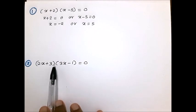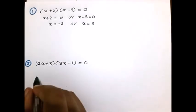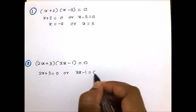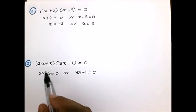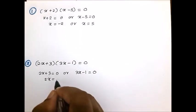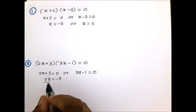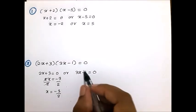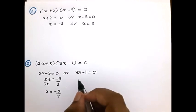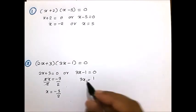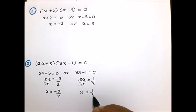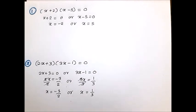Now look at the second example. Again, multiplication of two terms equals 0. We write 2x + 3 = 0 or 3x - 1 = 0. For the first: take +3 to the right to get -3, then divide both sides by 2, giving x = -3/2. For the second: take -1 to the right to get +1, then divide both sides by 3, giving x = 1/3. The answer is x = -3/2 or x = 1/3.